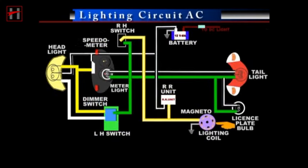The lighting coil, rectifier cum regulator unit, headlight assembly, tail light, high beam pilot bulb, meter light, and license plate light are grounded directly or through wire.